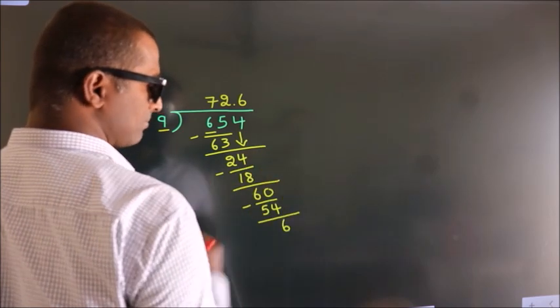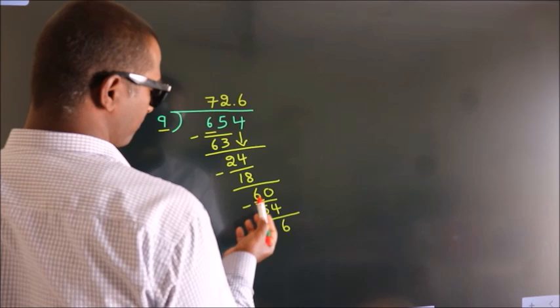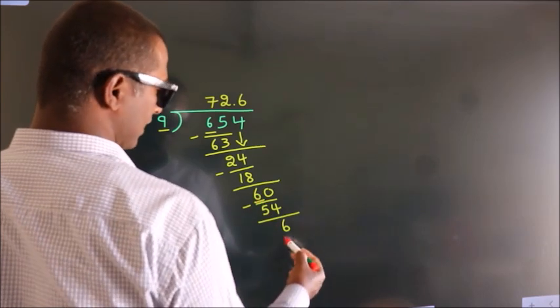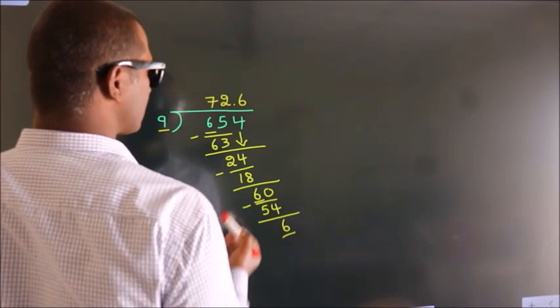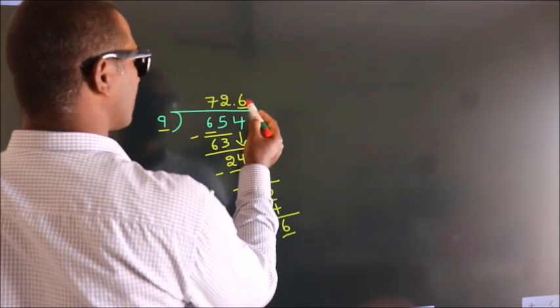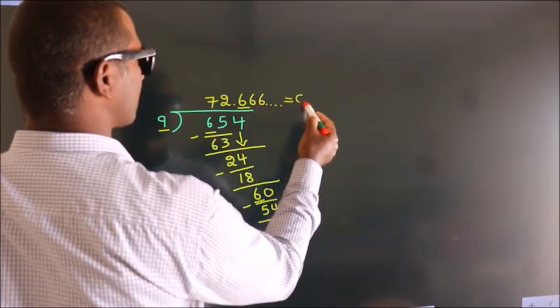Now you observe, we had 6 here and we got 6 again. That means this number keeps on repeating. So this is our quotient.